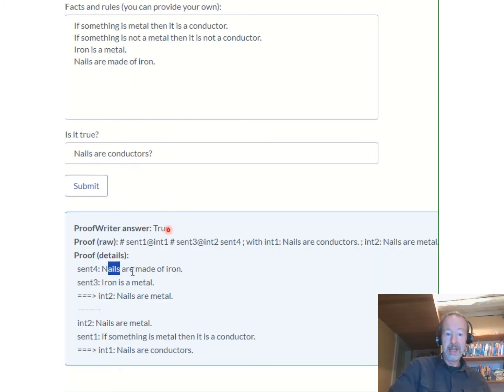The system gives the correct answer, true, but it also gives the proof. Nails are made of iron, iron's a metal, therefore nails are metal, therefore nails are conductors.